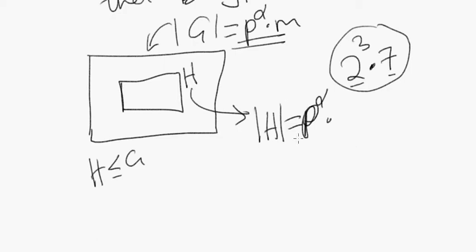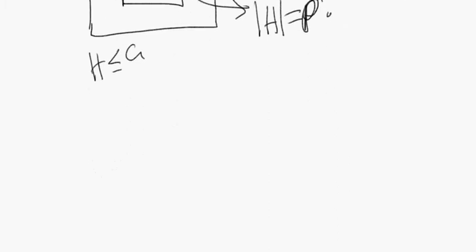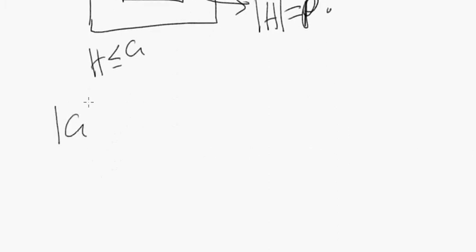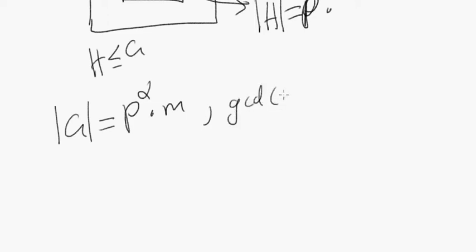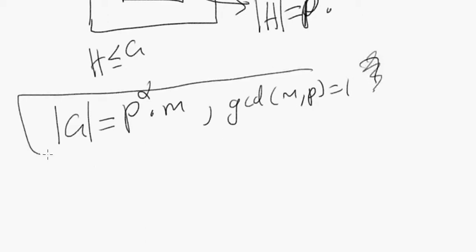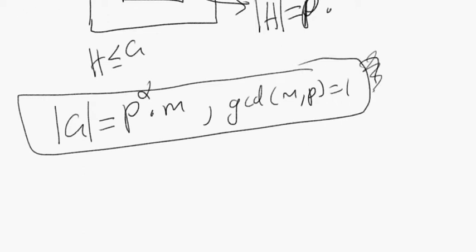So this raises a series of questions. One of them is: okay, suppose the order of the group is p to the alpha times m, and gcd of m and p equals 1 — they're relatively prime. So what? What's so special about that? What's the consequence? What's so special about having a group of the form p to the alpha times m where p and m are relatively prime?